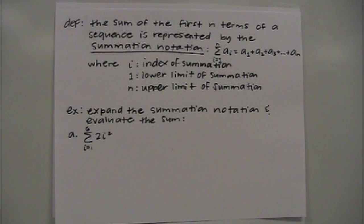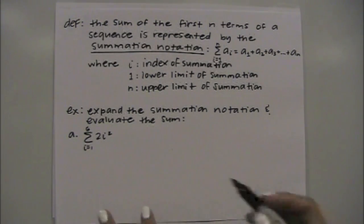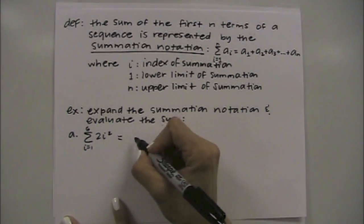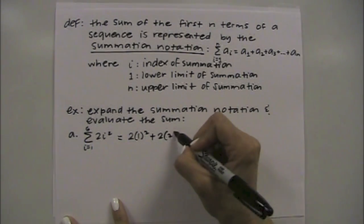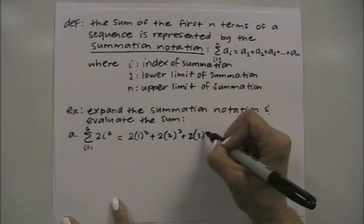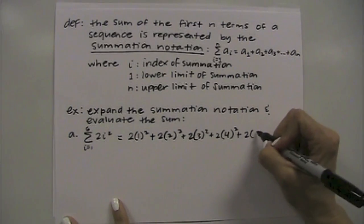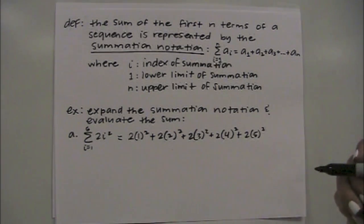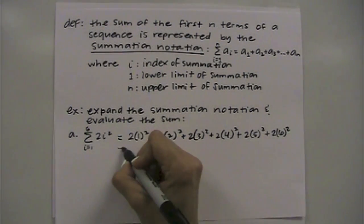So example, expand the summation notation and evaluate the sum. So we have sigma, on the bottom you have i equals 1, and then on top your upper limit of summation is 6, and your equation or expression is 2i squared. So first we'll plug in 1 for i and square it, then you're plugging in 2, plug in 3, keep going until you get to that upper value of, in this case 6. And go ahead and simplify.